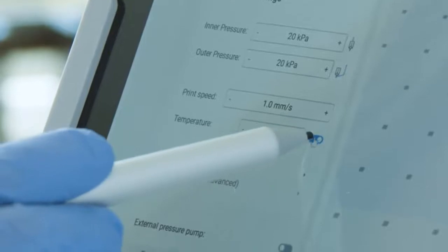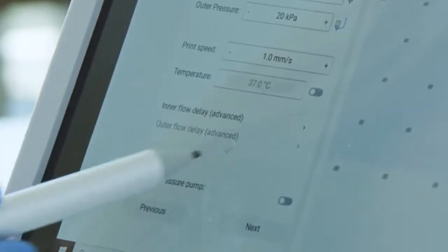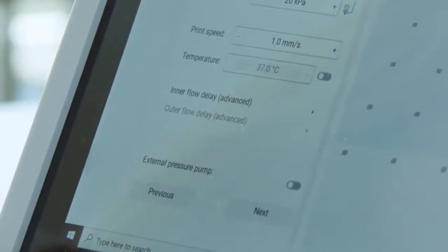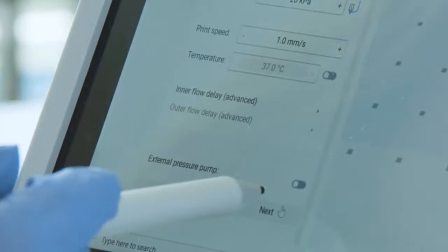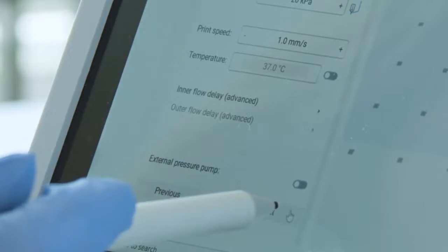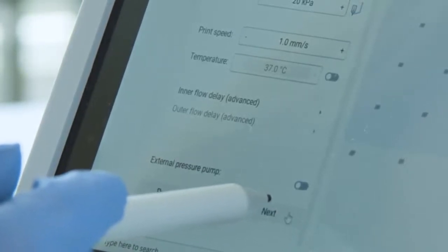And if you would like to have inner or outer flow delay, select here. We have an option here for external pressure pump. The Bio-X6 already covers the pressure up to 200 kilopascals for each printhead. And if you need to use higher pressure for extrusion, you can assemble an external pressure pump up to 700 kilopascals.